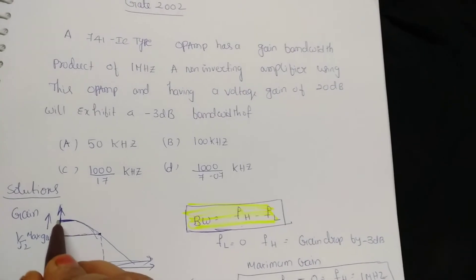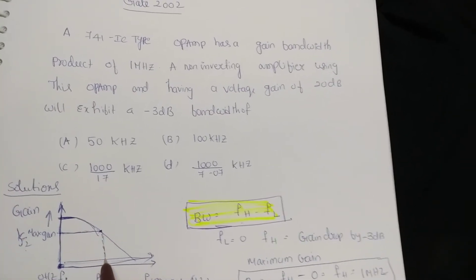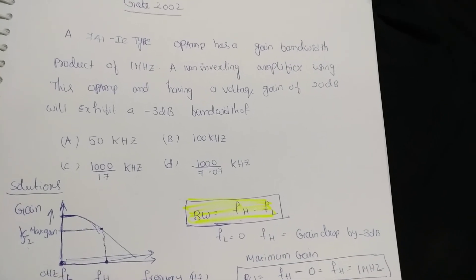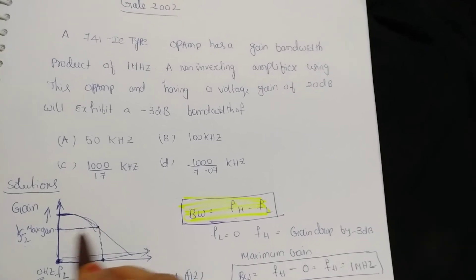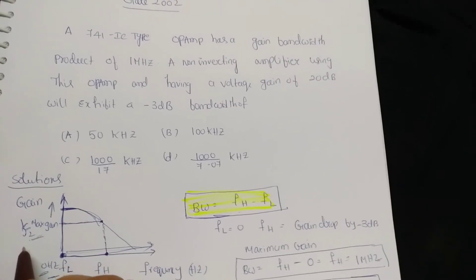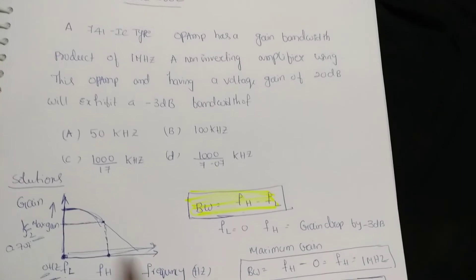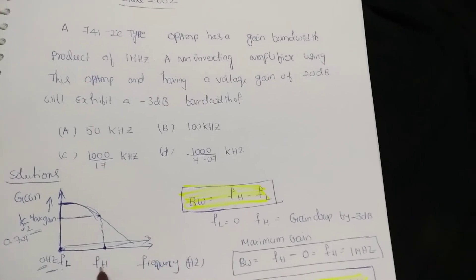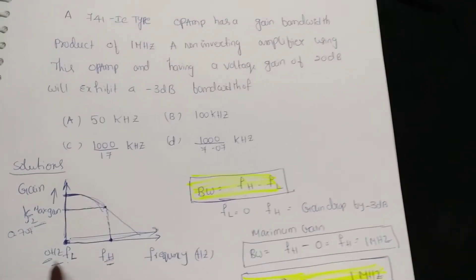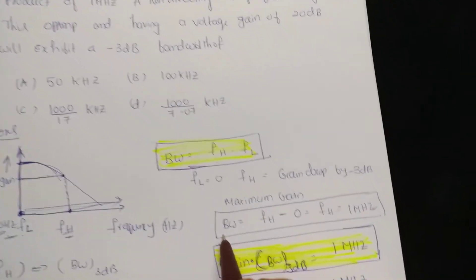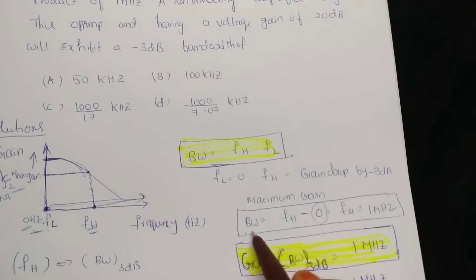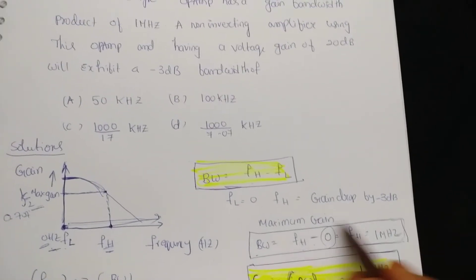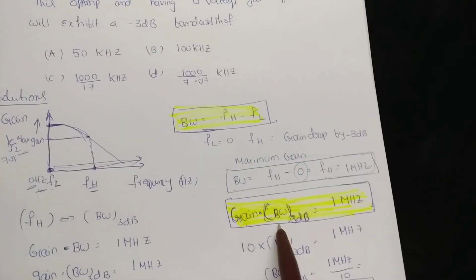On the frequency response, FL is at 0 Hz and FH is the point where gain drops to maximum gain divided by root 2 — that is, 0.707 — which is the higher cutoff frequency. Bandwidth equals FH minus FL. Since FL is 0, bandwidth equals FH, which equals 1 megahertz from the given problem.